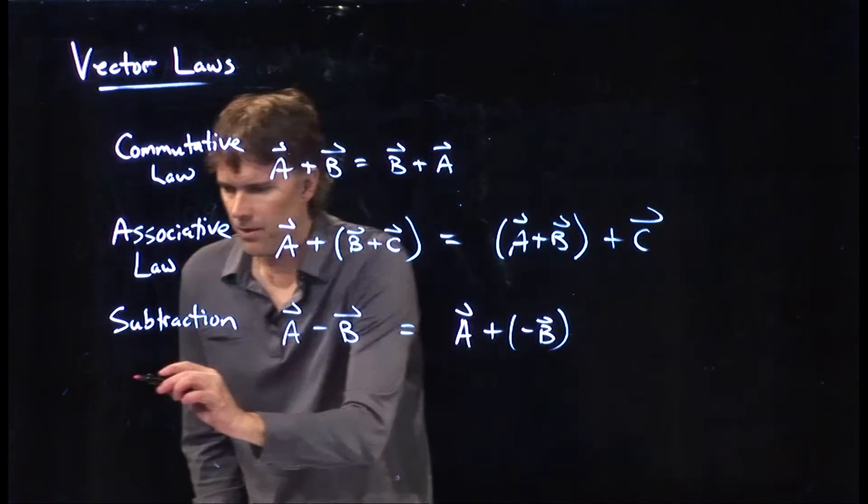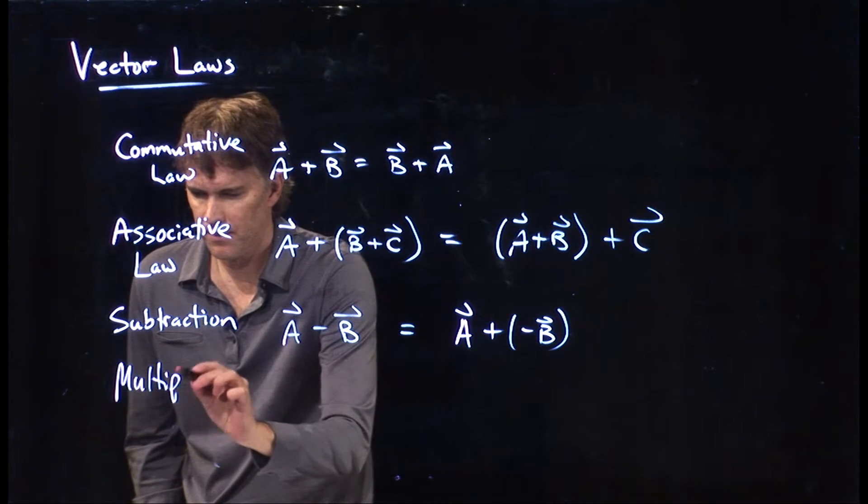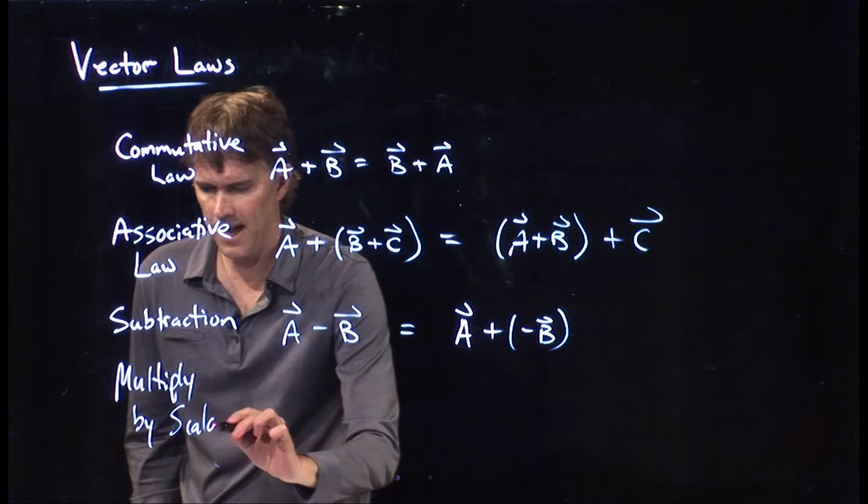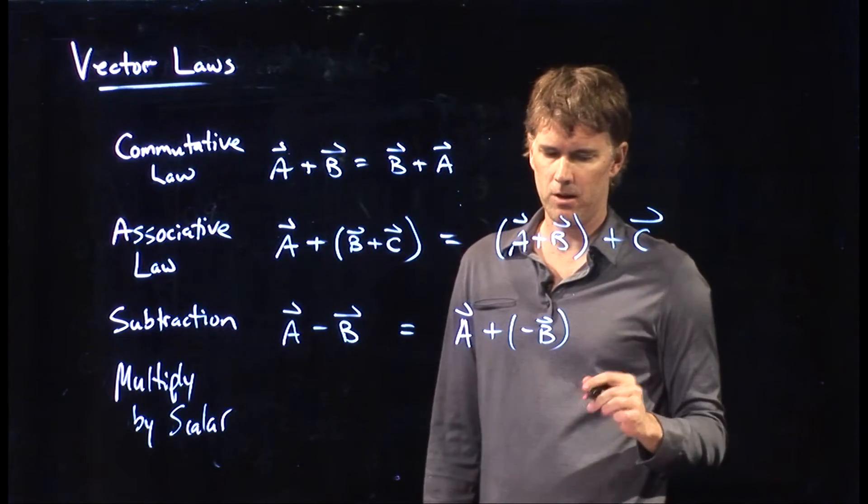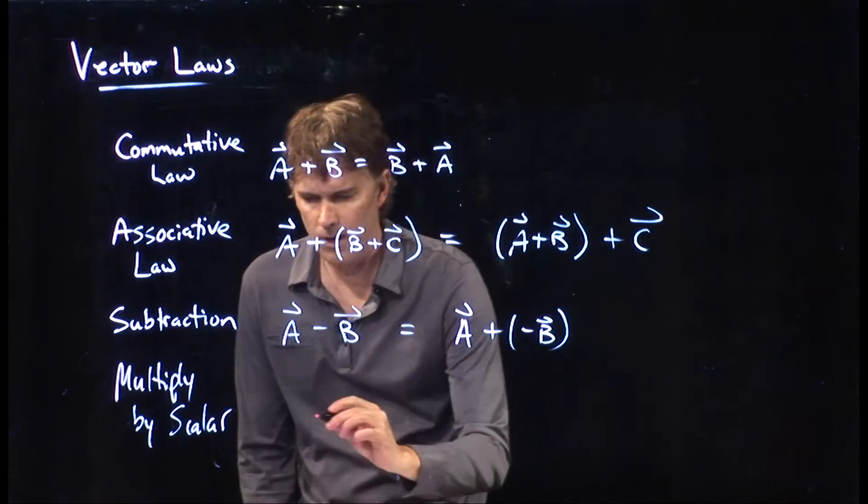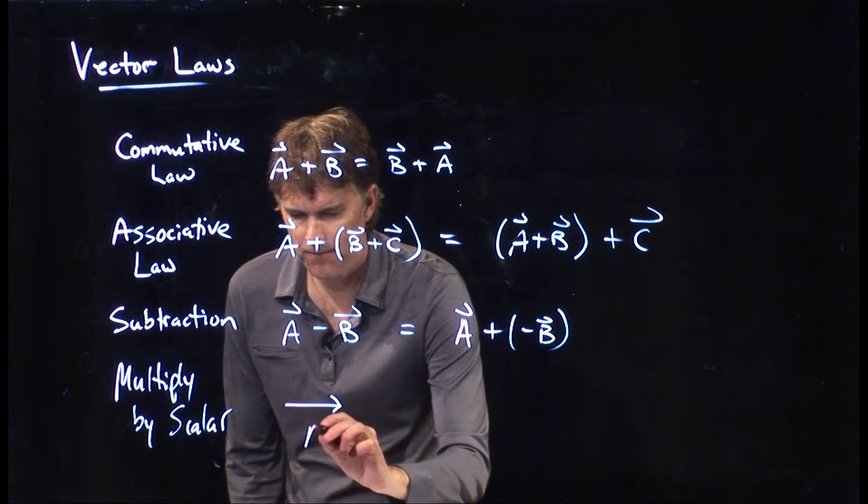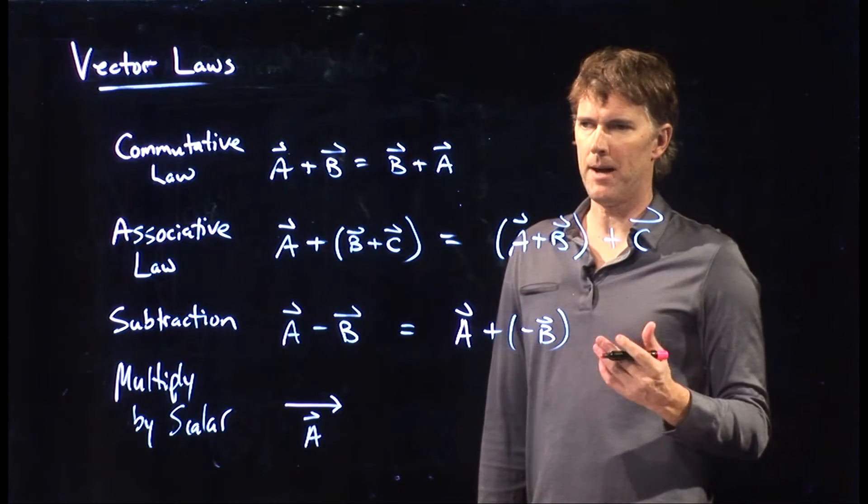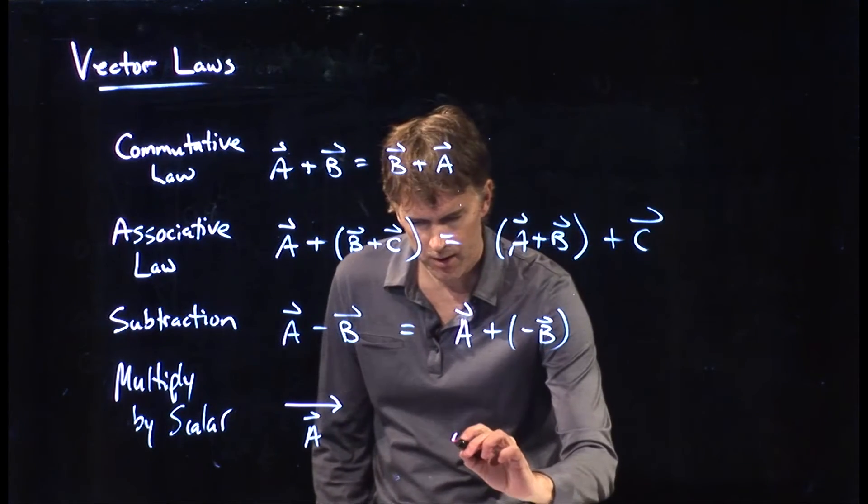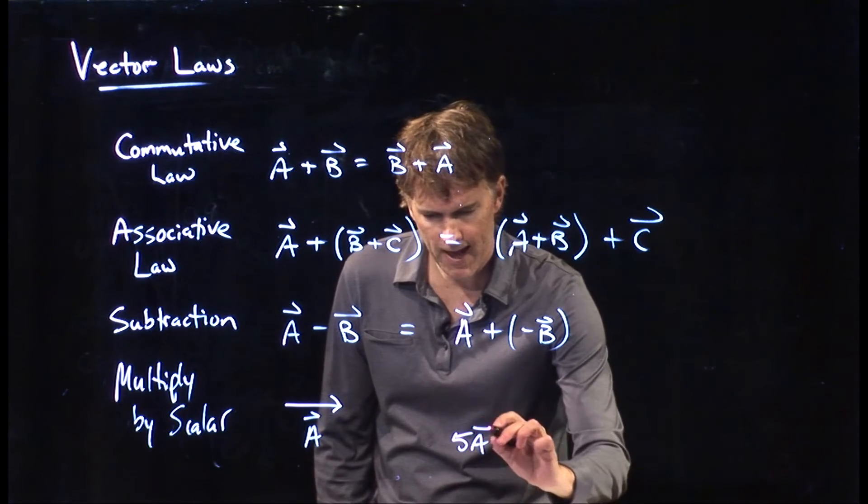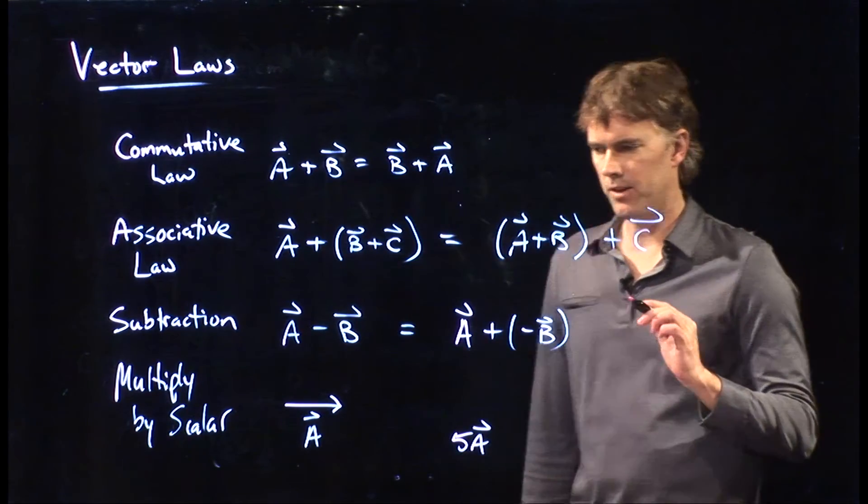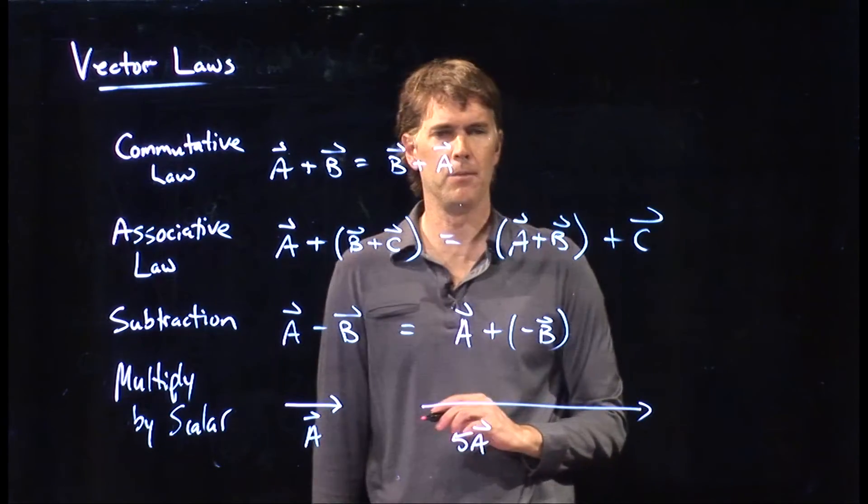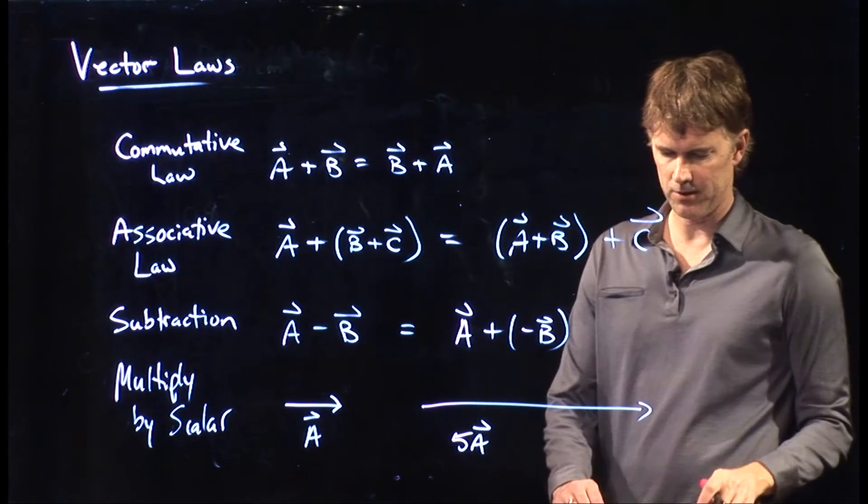The last one that you need to worry about is when you multiply a vector by a scalar. When I multiply by a scalar, what happens? If I have a vector A that looks like that and I multiply it by a number, say 5, what would 5A look like? It is exact same direction, just 5 times as long. That's what a scalar does.